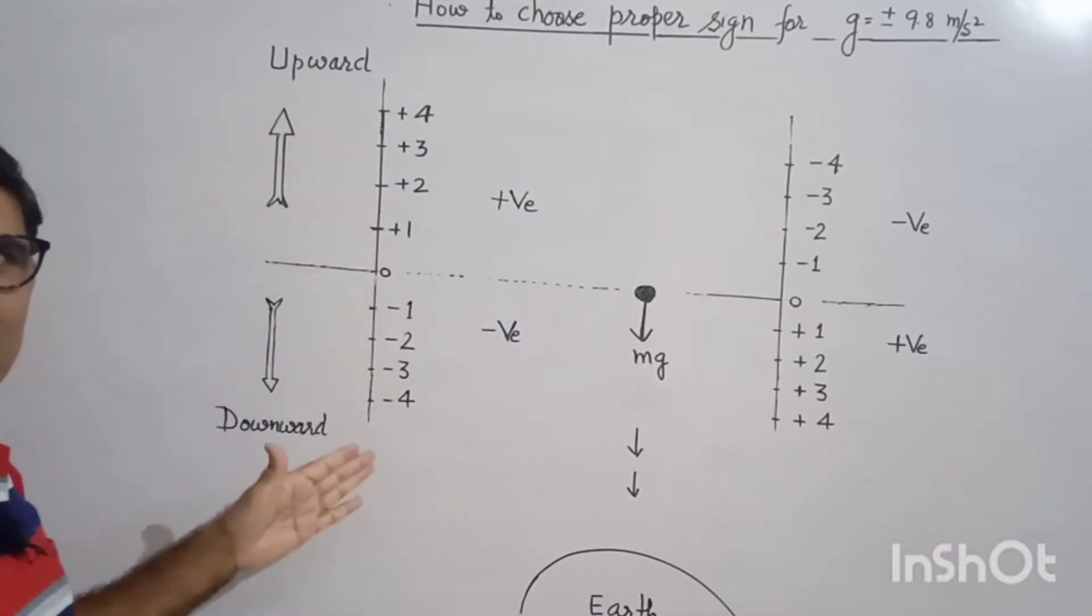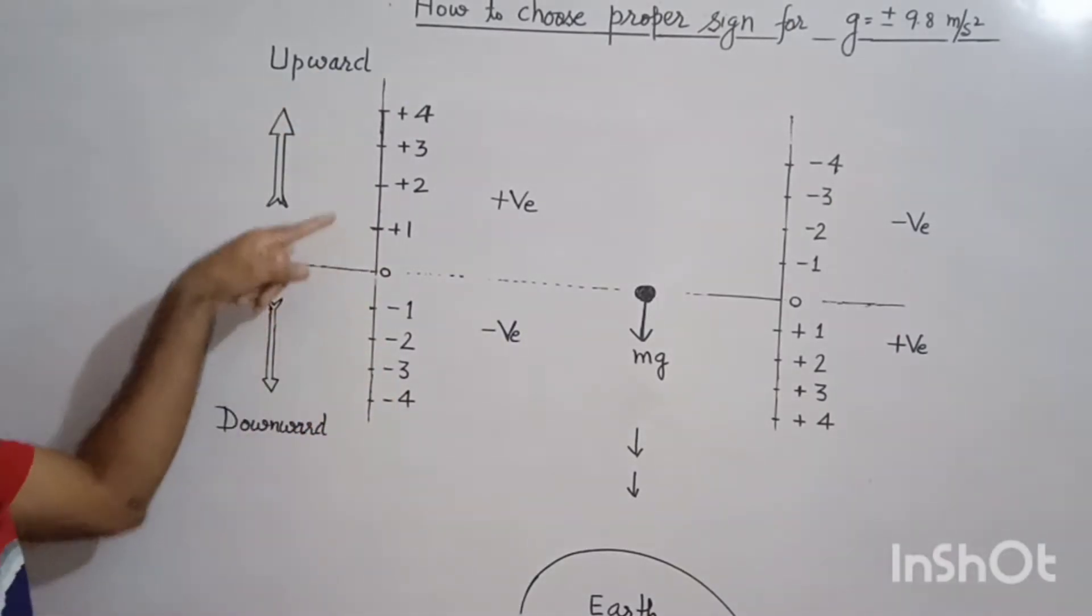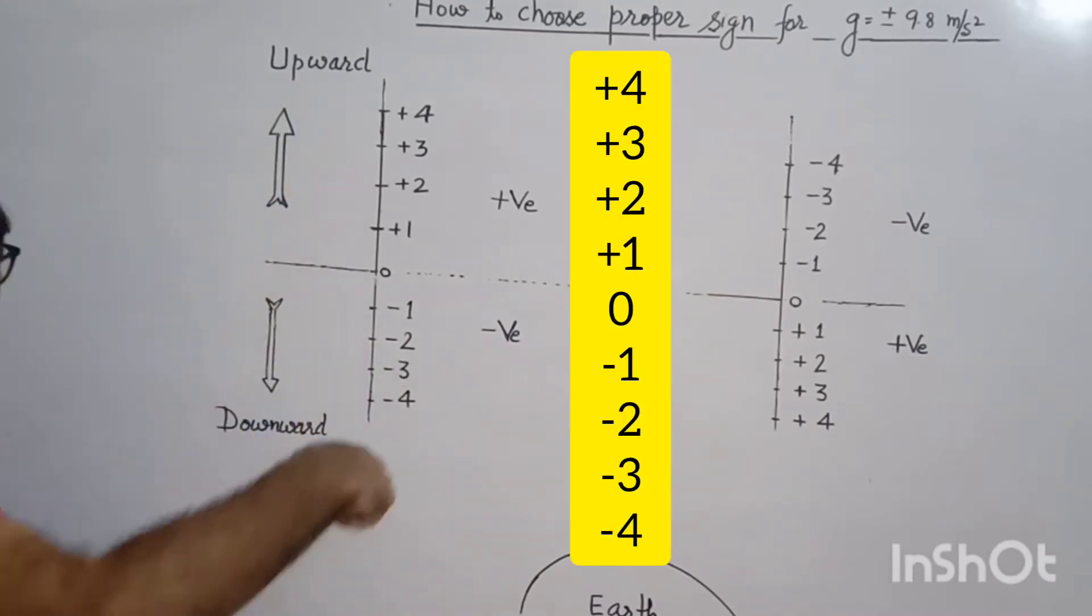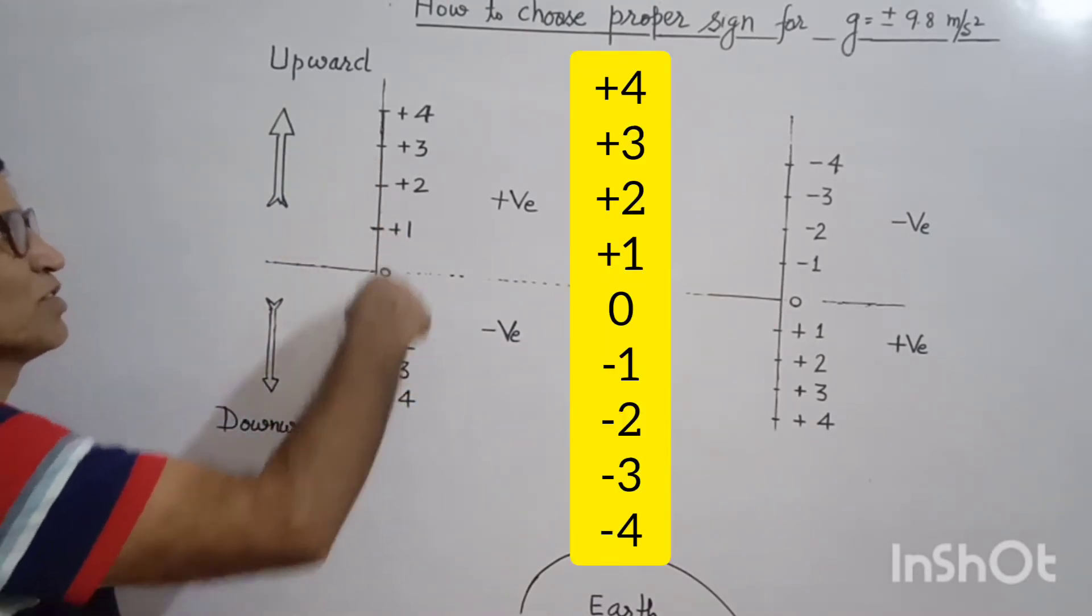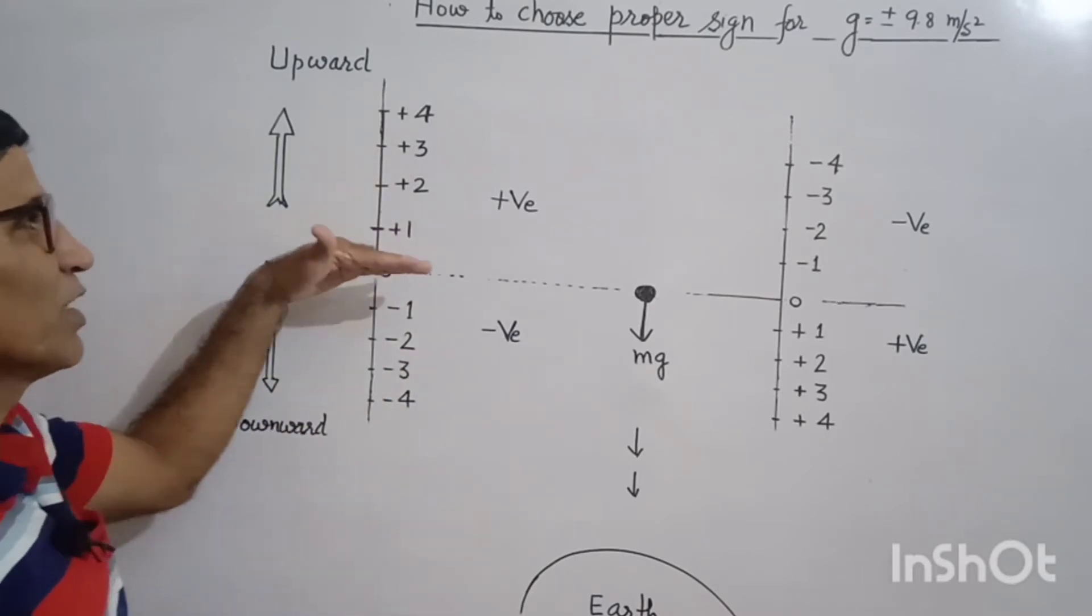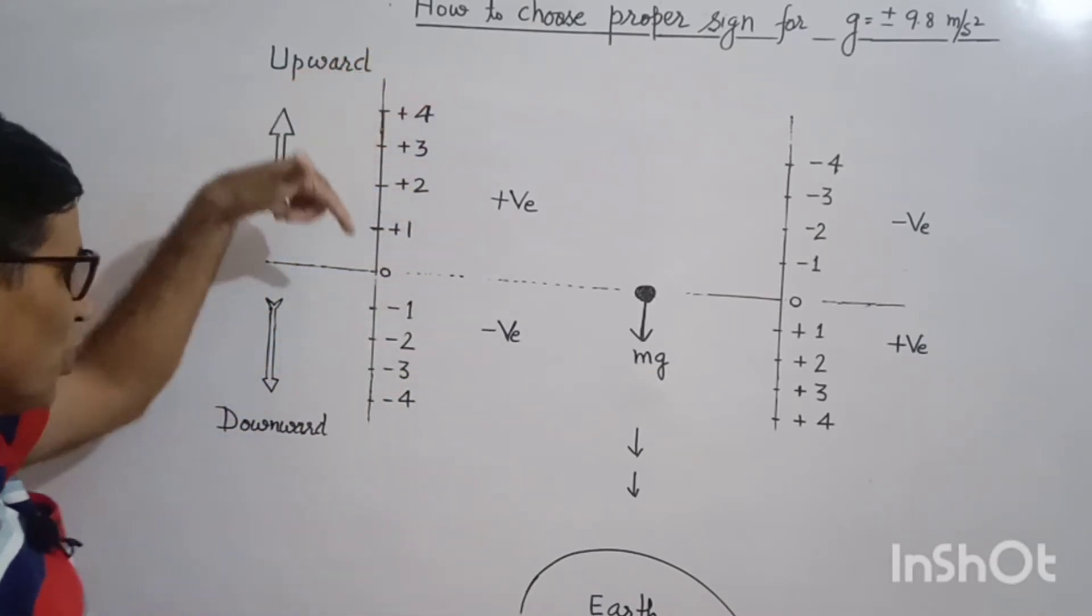So this is the number line. You can see the numbers in upward direction are increasing. Minus 4, minus 3, minus 2, minus 1 increasing. It means I have taken upward direction positive. So downward is negative.